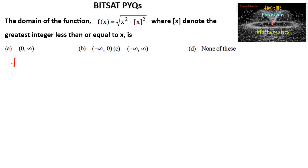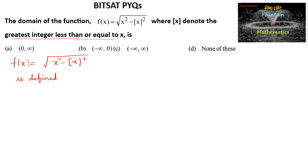The domain of the function f(x) = √(x² - ⌊x⌋²), where ⌊x⌋ denotes the greatest integer less than or equal to x, is defined only when x² - ⌊x⌋² is greater than or equal to zero, that is, x² ≥ ⌊x⌋².